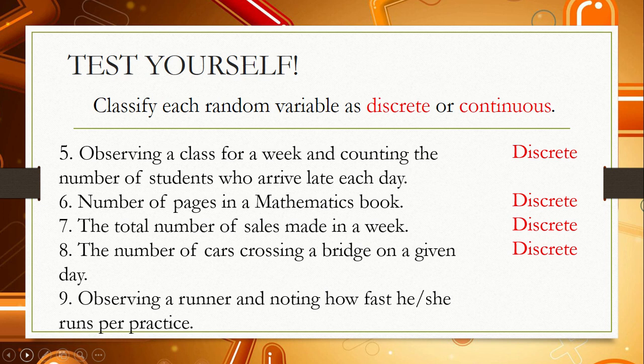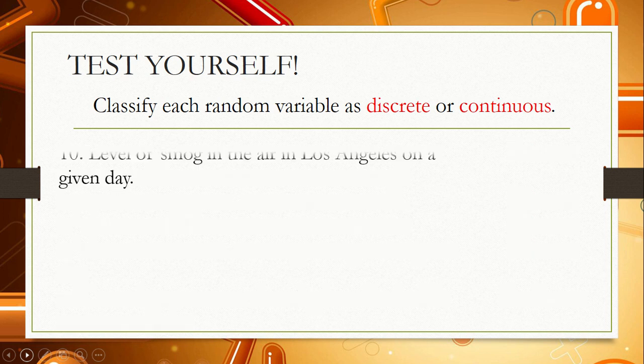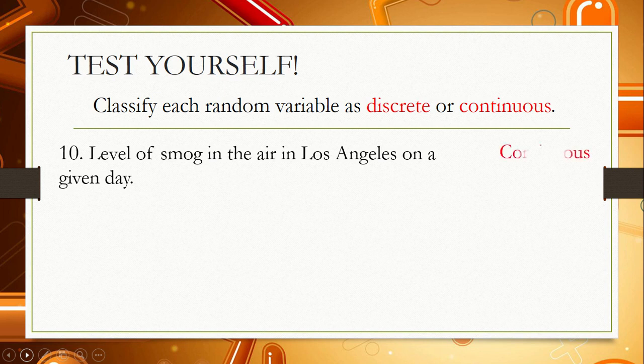Number 9: observing a runner and noting how fast he or she runs per practice. The answer here is continuous, because you will measure how fast the runner runs per practice — that makes it continuous. Number 10: the level of smog in the air in Los Angeles on a given day. You cannot count smog, so it is a continuous random variable.